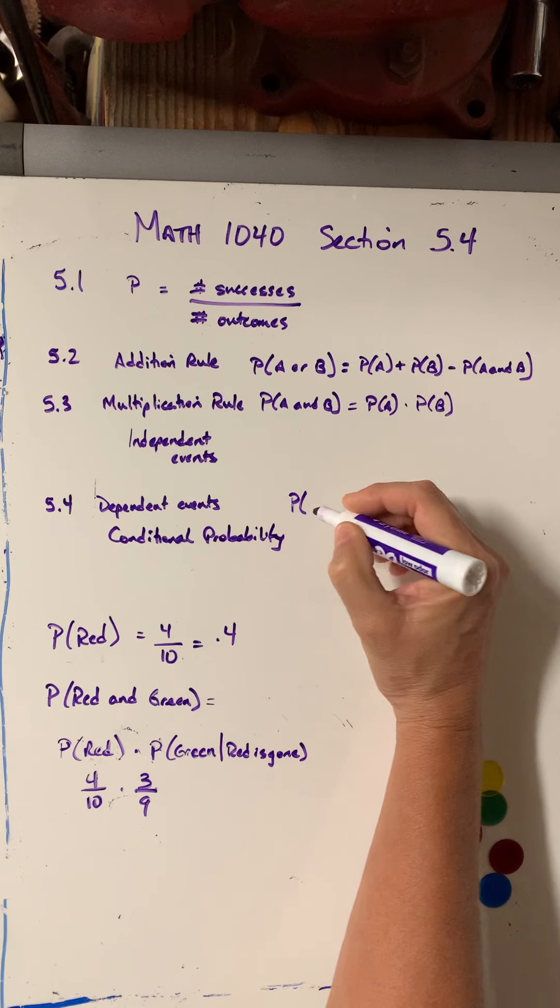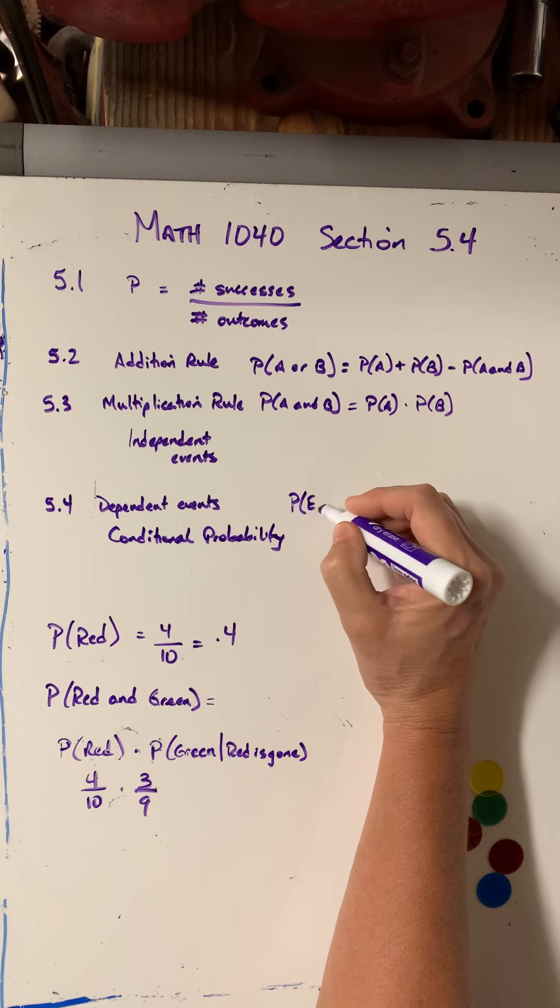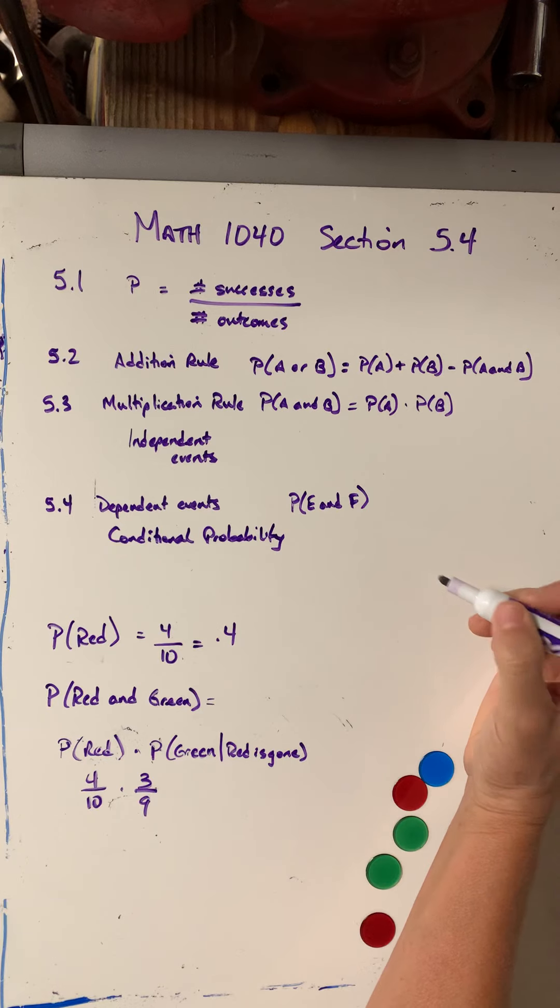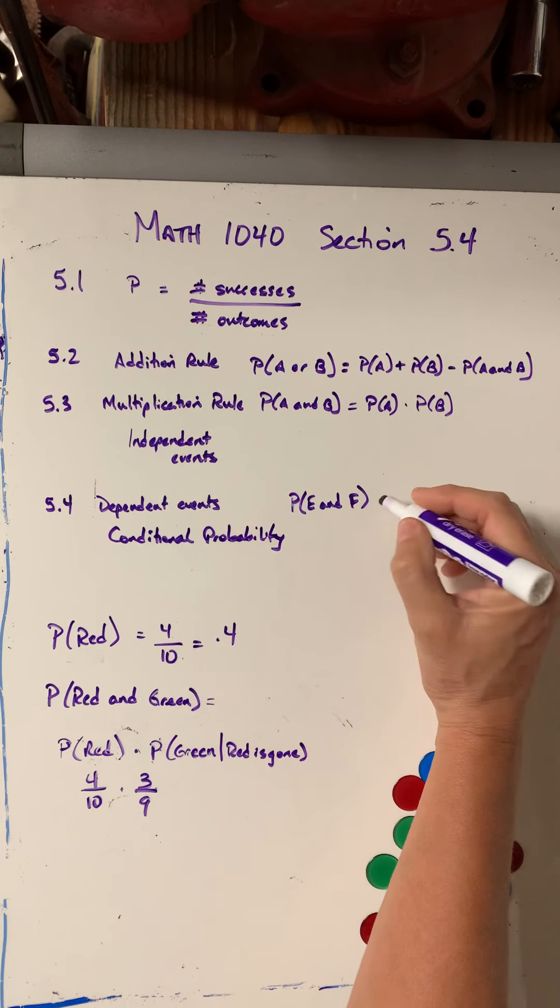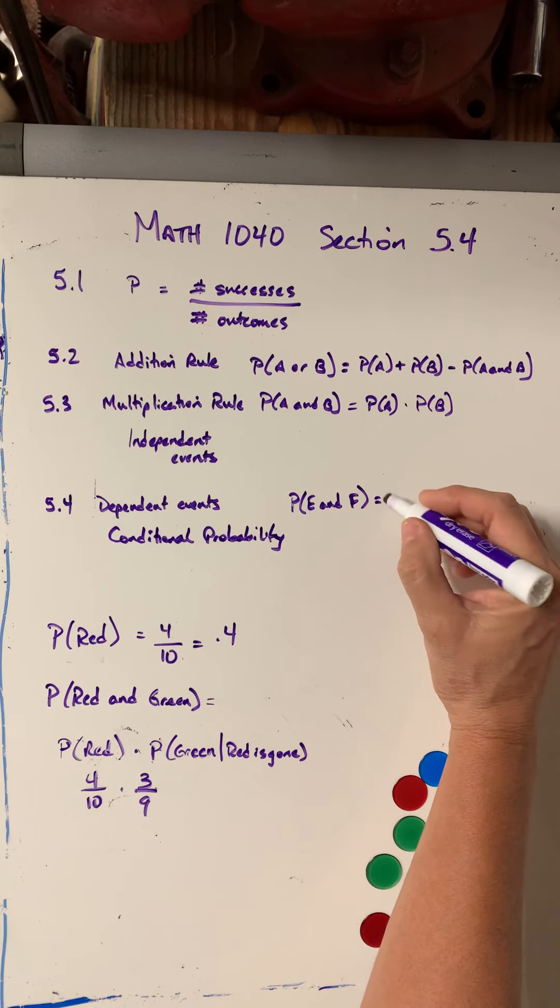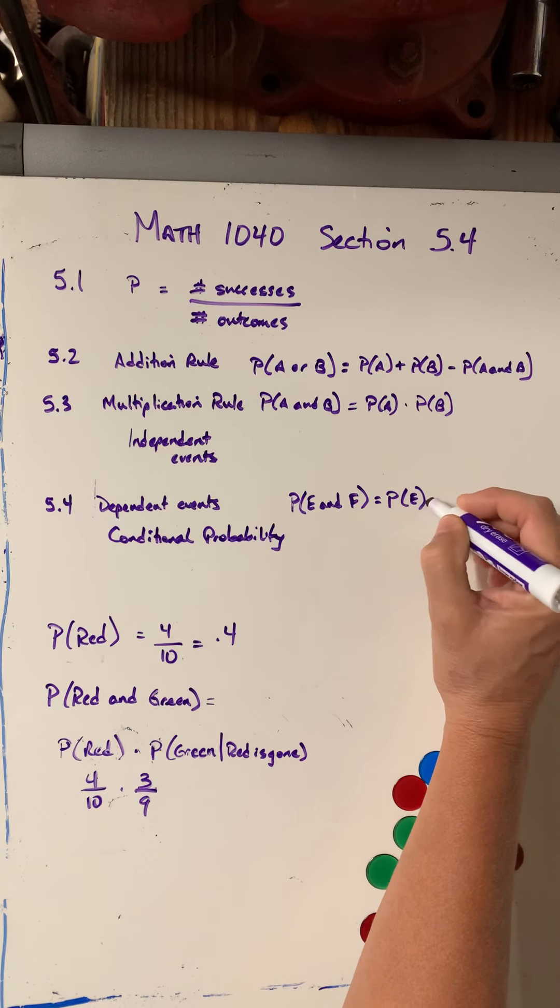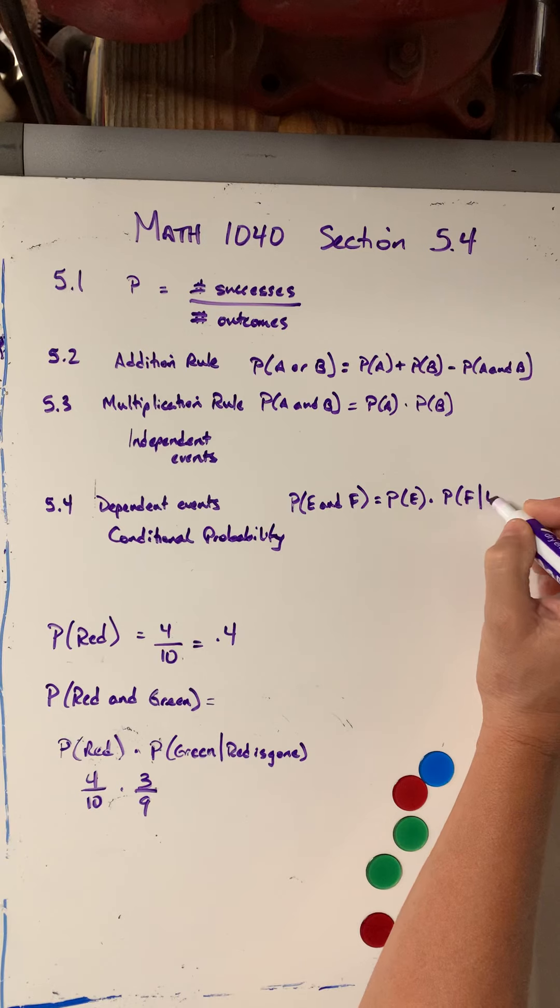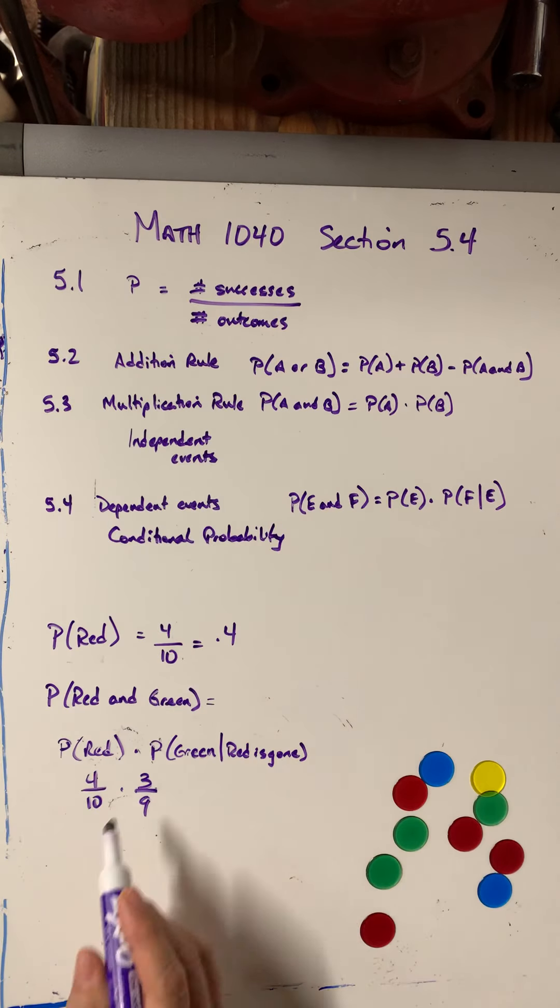If I want to know the probability of E and F or A and B or whatever, knowing that it's conditional, then I would use my multiplication rule, probability of E times probability of F given that E has occurred, which is what happened here. So given that the red was gone.